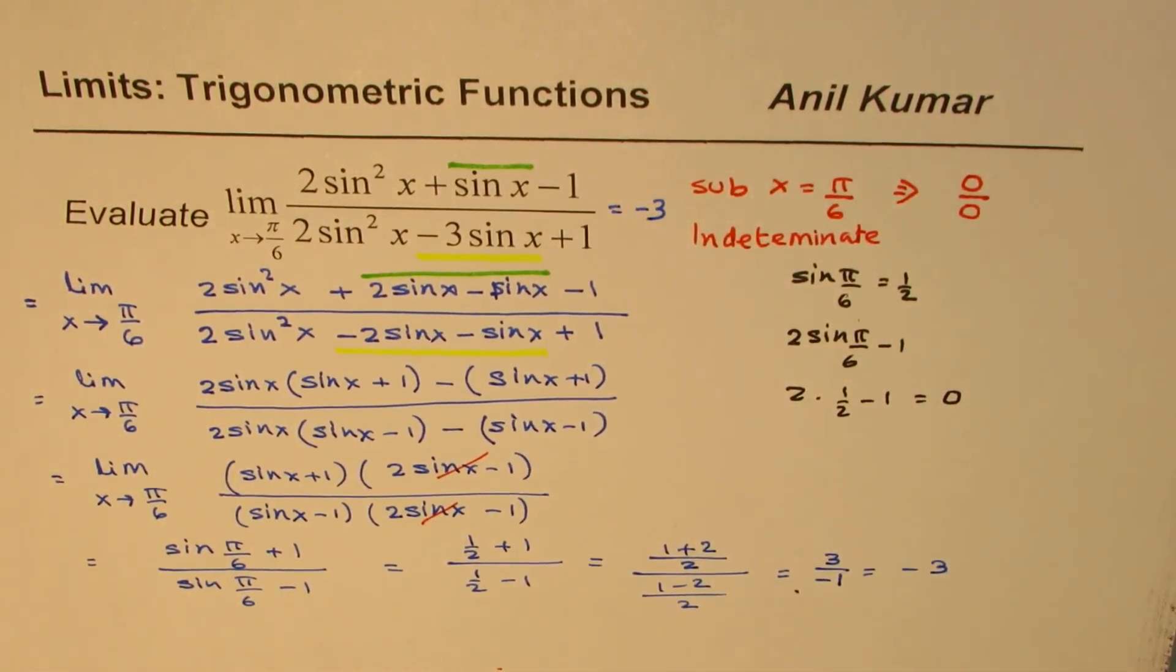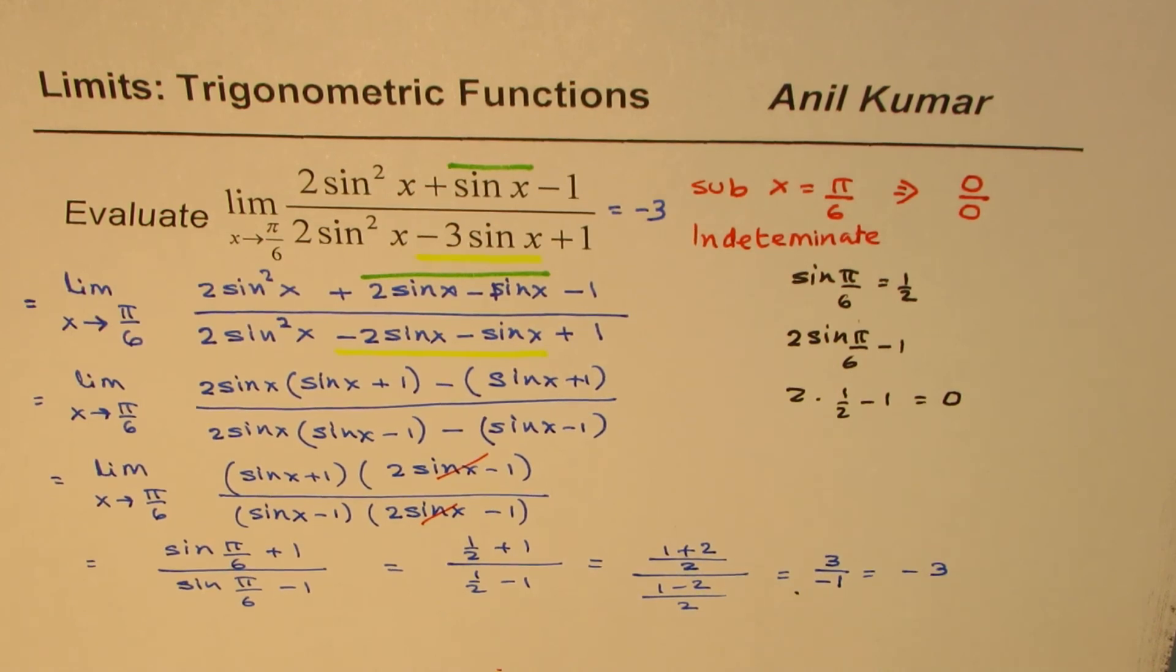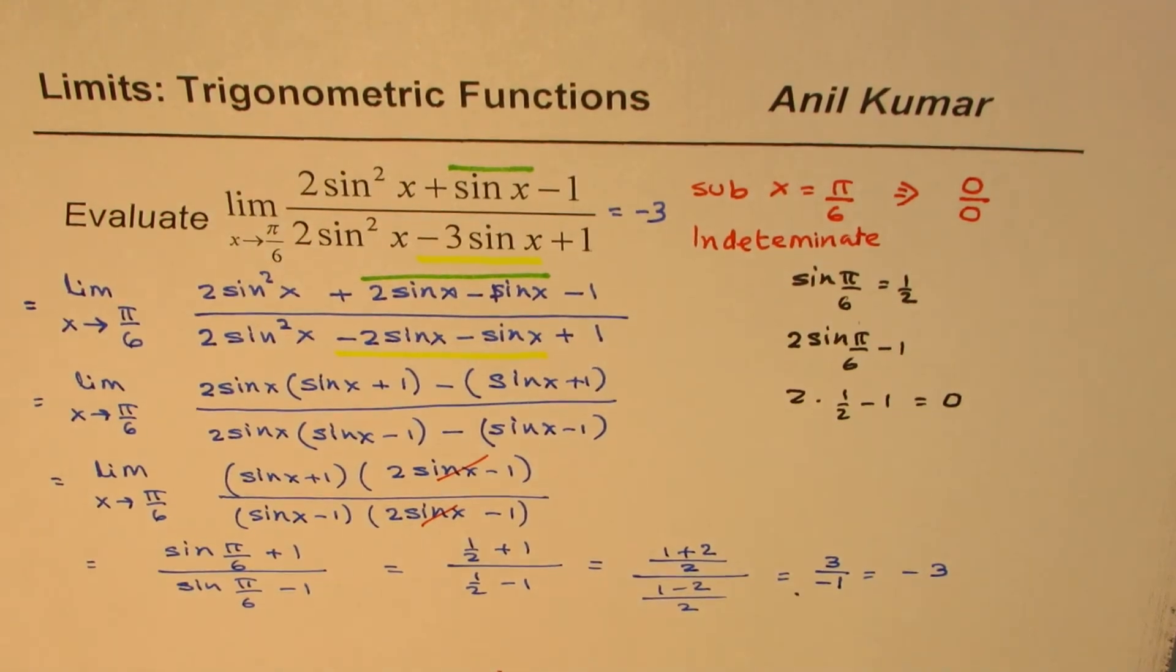So that is how we can get the solution of the given equation. I hope that helps. So factoring is a very important technique to simplify the trigonometric expression and then find the limit as we have seen in this particular video. I hope that helps. Thank you and all the best.